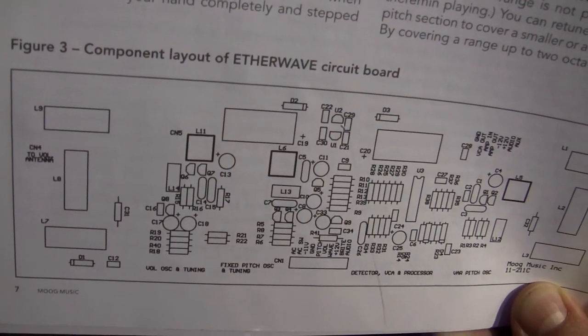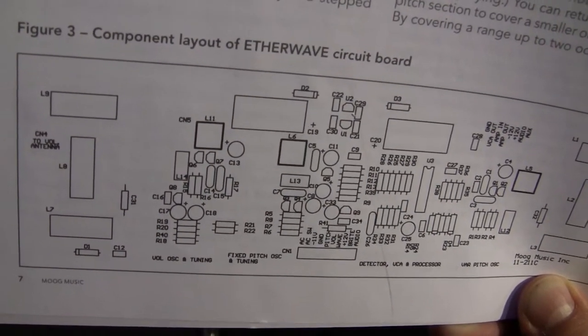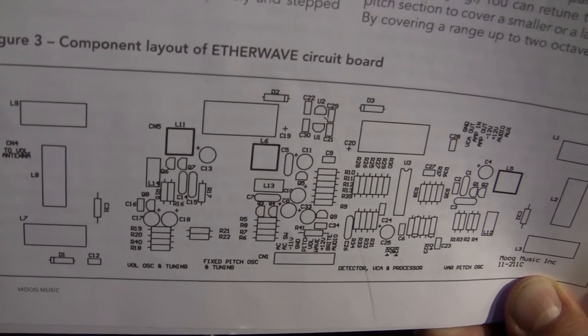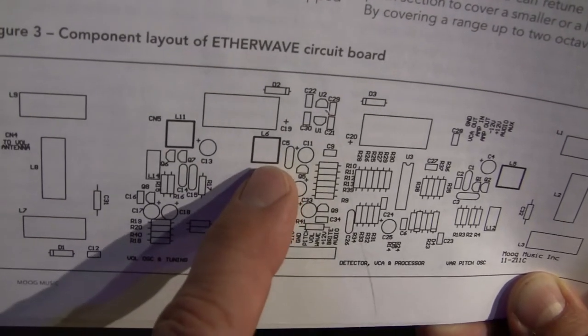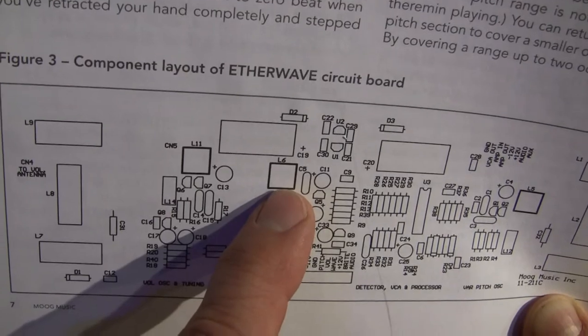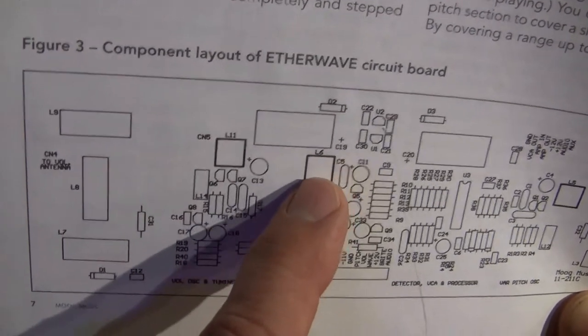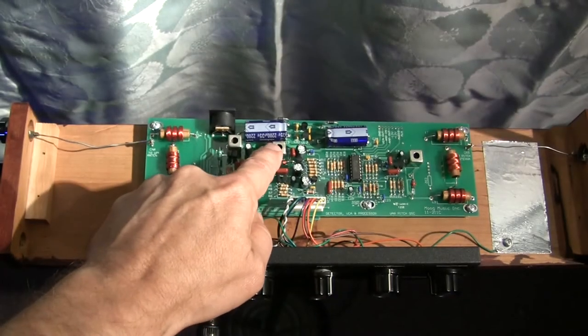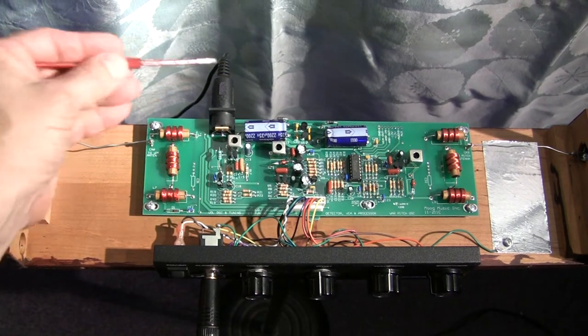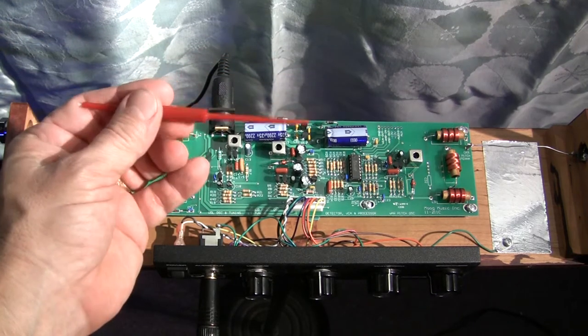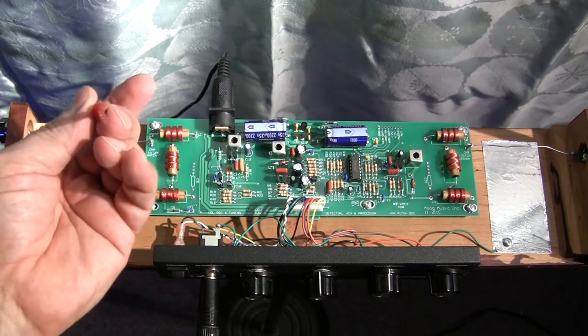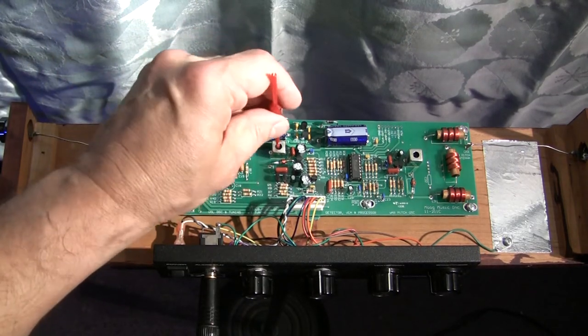In the user manual that came with your theremin, you have a component layout of the etherwave circuit board. And we're going to be dealing exclusively with L6, which is the fixed pitch oscillator transformer. It's here on your diagram, and it's here in the theremin. So now, with the power source in, I'm going to use the alignment tool that came with the theremin and insert the hexagonal end into L6, down into the slug.